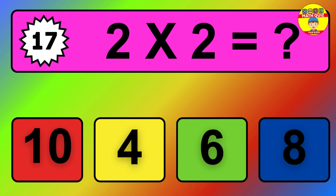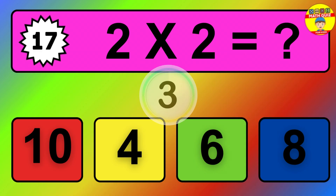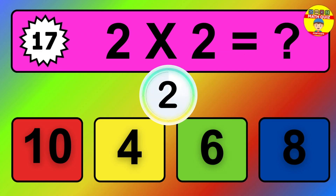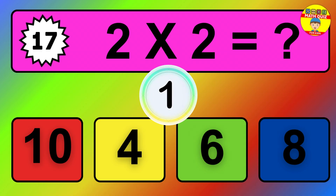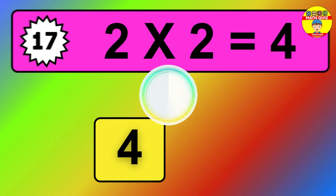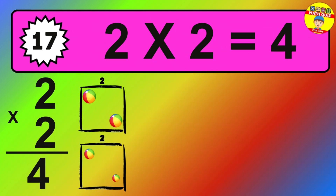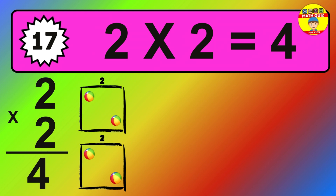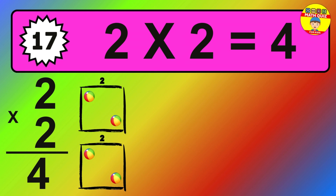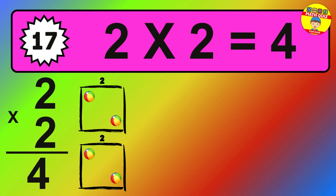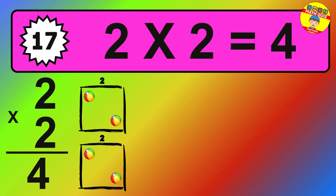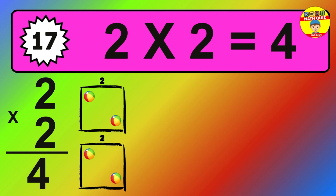Question seventeen: two times two equals what? The answer is: two times two is 4. To calculate, we have two groups with two balls each one. So how many balls do we have? 4 balls.